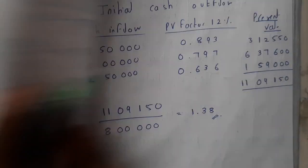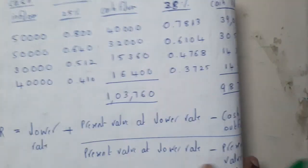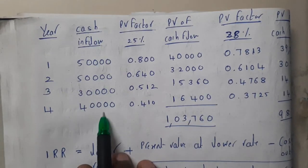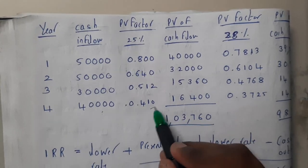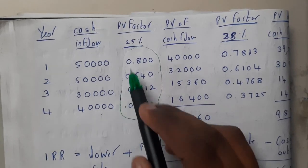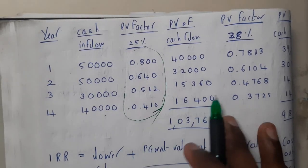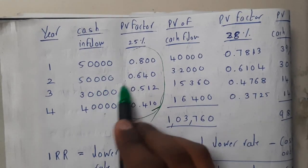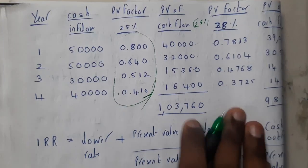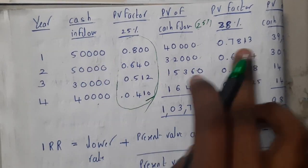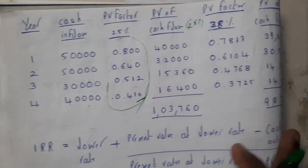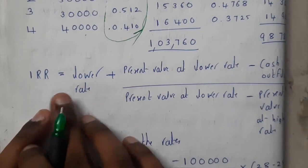Similar to how we calculated present value problems in our previous lecture, here we calculate the PV factor. The PV factor values should either be given in the question or looked up from a table. We multiply the PV factors with the respective cash inflows for both 25% and 28% to get the total present value of cash inflows at each rate.